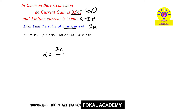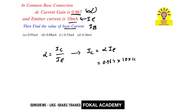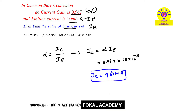First, we know that alpha equals the ratio of collector current to emitter current. From this, we get collector current equal to alpha into emitter current. So alpha is 0.967 and emitter current is 10 milliampere, that is 10 × 10⁻³. By simplifying this, we get collector current equal to 9.67 milliampere.